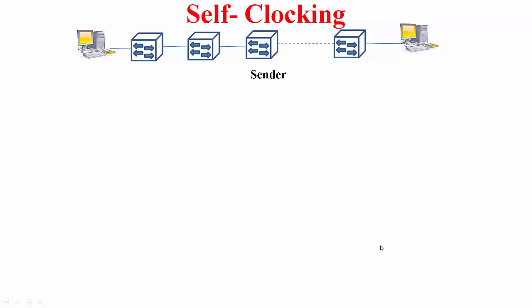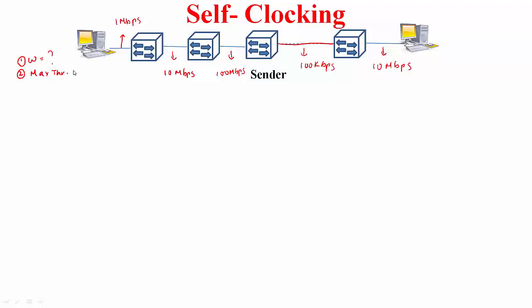What we have seen so far is over one hop. What if the sliding window protocol is run over many hops? Suppose the links have different bandwidths — what would you set your window size to, and what is the maximum throughput achievable? The maximum throughput is dictated by the bottleneck link, which has the lowest bandwidth along the path. You would set W equal to RTT times the bottleneck bandwidth of 100 kbps.